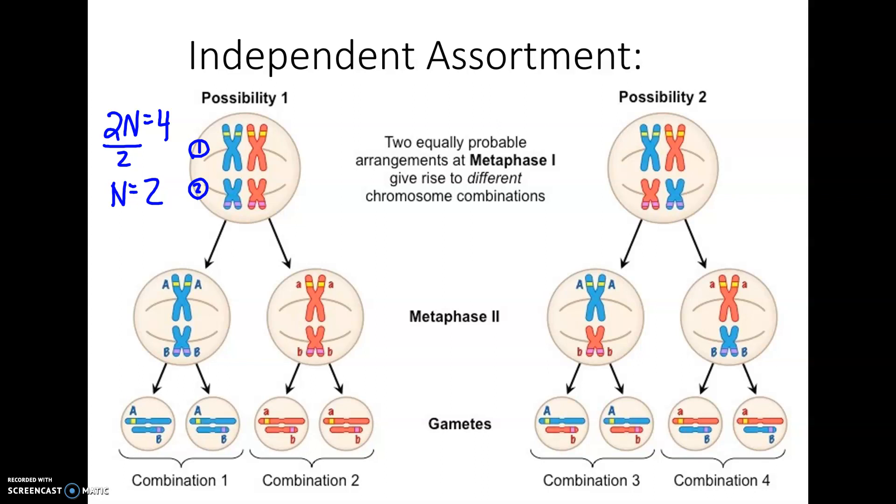And what we're saying in independent assortment is that it's completely random. They made these two different colors on purpose. It's completely random which one of these two lines up on the left versus the right. And so depending on how they line up, the number of possible outcomes in an egg cell or a sperm cell is 2 to the n, n being the haploid number.